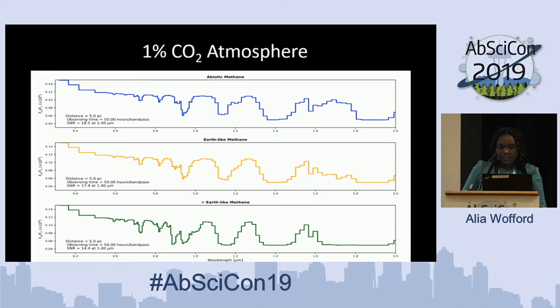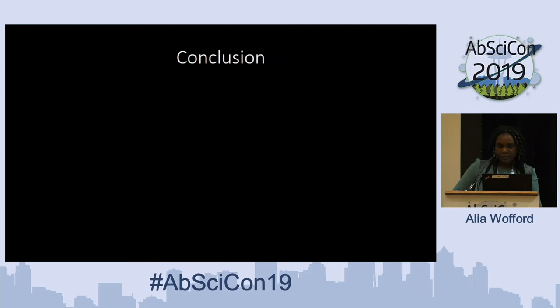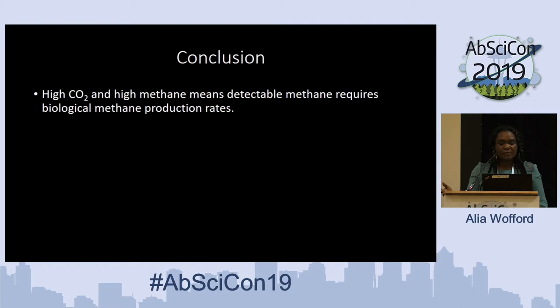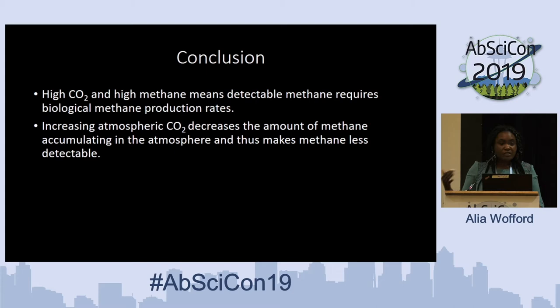In our last step, we use LUVOIR's coronagraph to produce direct imaging — the actual perspective an observer would see for these fluxes. You still see the same spectral features across various wavelengths, and you can also factor in signal-to-noise ratio and instrument parameters. In conclusion, high CO2 combined with high methane produces detectable methane and signs of life — methane production rates comparable to biology. Increasing atmospheric CO2 decreases methane accumulation, making methane less detectable.